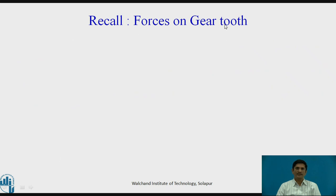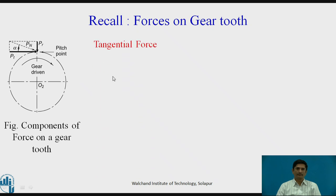You can recall what are the forces acting on the gear tooth. For a typical driven gear, PN is the resultant force which is acting at an angle alpha, the pressure angle, at the pitch point. It has two components: Pt and Pr. The tangential force is given as Pt equals 2Mt upon D'. The radial force is given as Pr equals Pt tan alpha. But we know that radial force does not take part in the power transmission. Only the tangential force is contributing for power transmission.